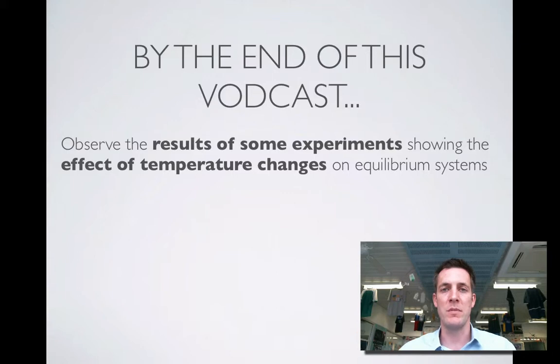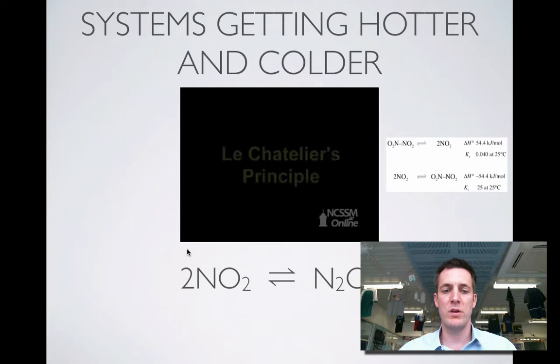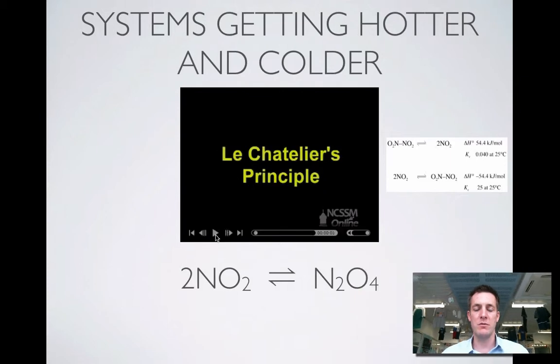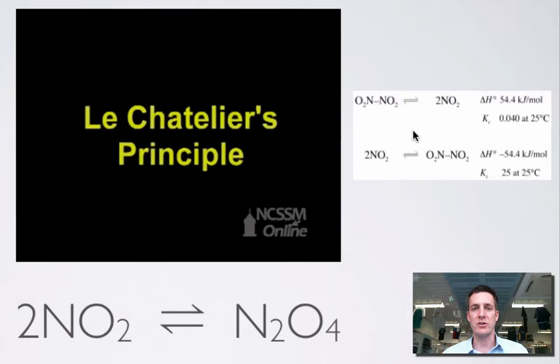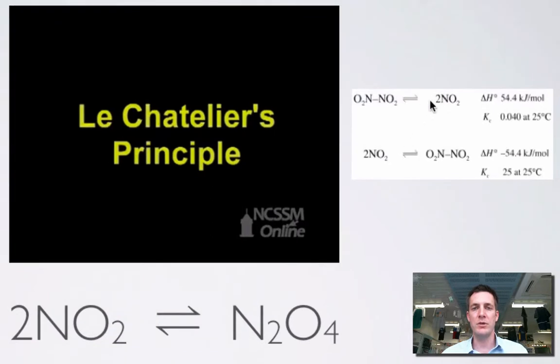Here we'll see what happens to them as they get hotter and colder. We're going to start with an equilibrium system we've seen before: nitrogen dioxide, which is a brown gas, turning into dinitrogen tetroxide, which is a colorless gas. We've got some information here about this reaction presented in a way we've hopefully seen in the introductory films. This is the reverse process if you look at it the way it's written.